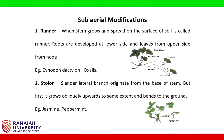Under sub-aerial modifications, the first type is runner. When a stem grows and spreads on the surface of the soil, it is called a runner. Roots develop at the lower side and leaves from the upper side at the node. Example: Cynodon dactylon and Oxalis. Stolon is a slender lateral branch that originates from the base of the stem, first grows obliquely upwards to some extent, then bends to the ground.